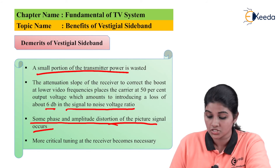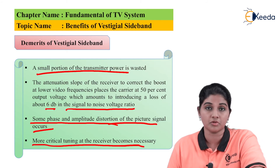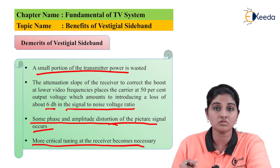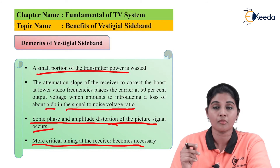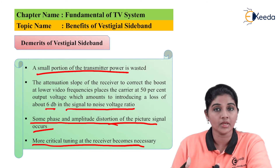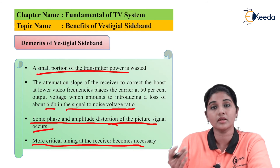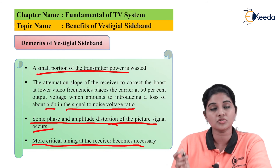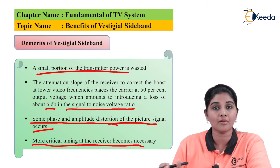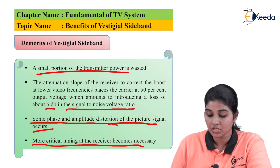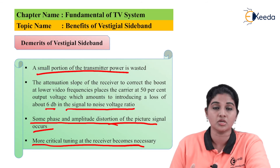The next disadvantage is that more critical tuning at the receiver becomes necessary, because it is very important to tune the receiver amplifiers properly; otherwise the signal may get corrupted or distorted. This critical tuning requirement is a notable limitation of VSB.